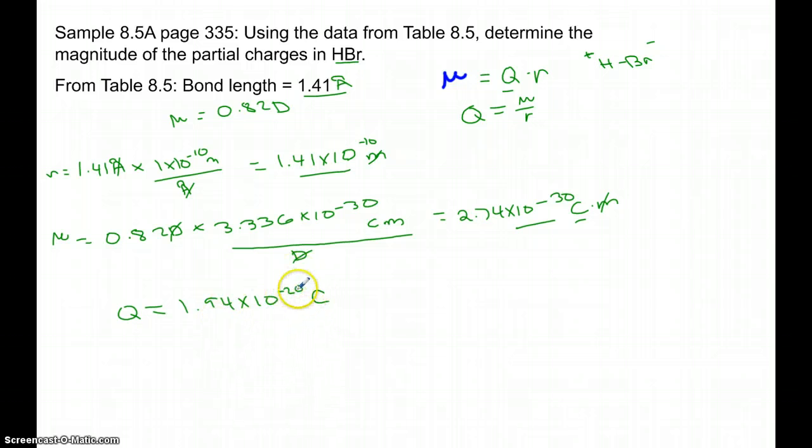Now this doesn't look very much like a fraction. It's certainly less than 1, but the magnitude of negative 20 is a tiny number. We're really looking for more like a fraction. What I'm looking for is what fraction of an electron was transferred. So I need to change this unit of coulombs, which is the unit of charge, to how much of an electron is that. Back in chapter 2,